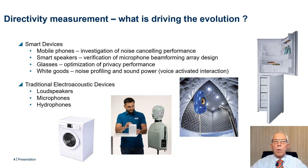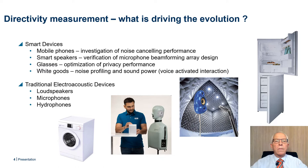The need for directivity measurements has become increasingly important as more and more devices become smarter and intelligent. For example, consider mobile phones, where investigations of noise-canceling performance in both sent and received directions call for testing in artificial noise environments, typically simulated by a loudspeaker setup. Under certain circumstances, it could be relevant to examine the noise-canceling performance from various directions. For smart speakers, verification of microphone beamforming array designs is another area that requires directivity measurements. For optimization of privacy performance, for example in glasses or headphones, directivity measurements are relevant as well.